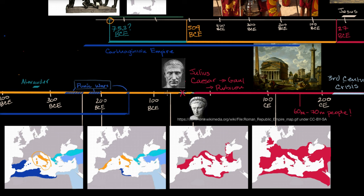Now as we go into the first century BCE, this is when Rome goes from being a republic to an empire. It happens when the general Julius Caesar is able to conquer Gaul — modern-day France and some other surrounding regions — for the Roman Republic. He becomes so powerful that when he comes back to Rome, a civil war ensues, and Julius Caesar is able to essentially win the civil war and declare himself a dictator. And then his adopted son Augustus, in 27 BCE, is declared emperor. And that's the beginning of the Roman Empire.